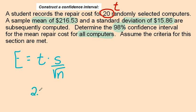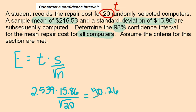2.539. So I will take 2.539 times the standard deviation of 15.86, divided by the square root of 20. My margin of error would be 40.268, divided by the square root of 20.